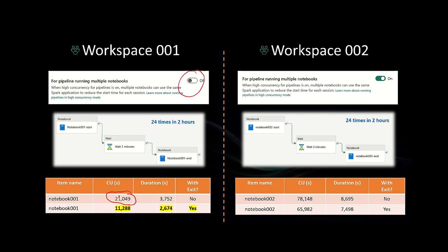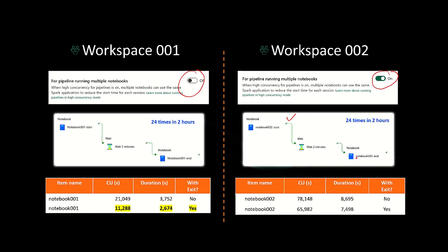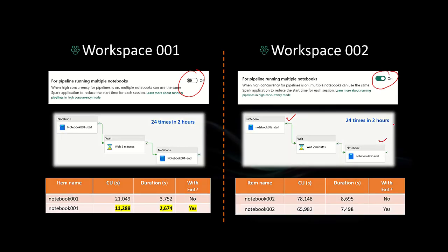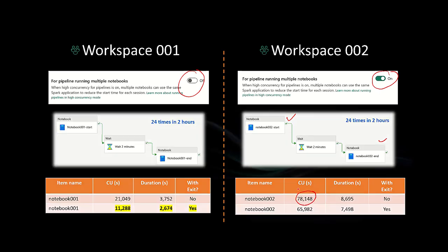I did the same test again with another workspace where I had enabled the high concurrency setting. Same pipeline configuration — another notebook with the same code: creates a dataset or data frame, saves it as a data table in a different lake house. Same code, same wait activity of two minutes, then executes the same notebook again. See the result — CU usage is 78,000, which is really high.